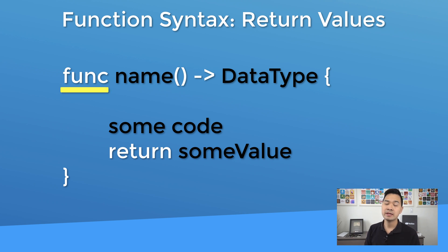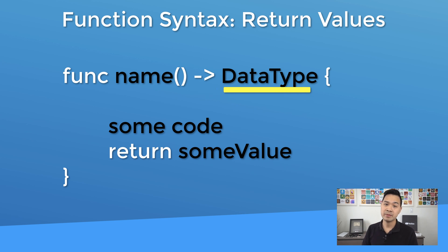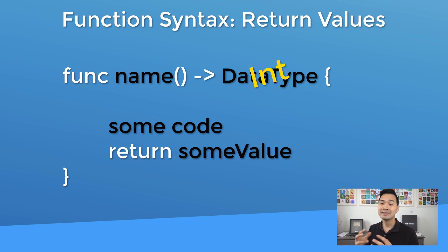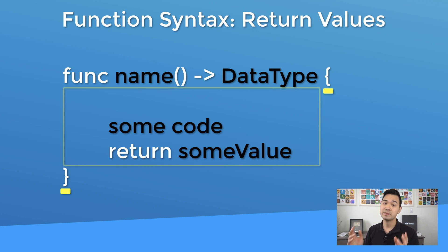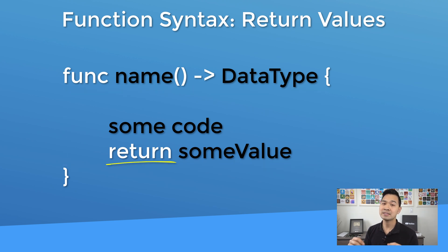You'll notice that we still have the func keyword and the function name followed by parentheses. But after that, you have a hyphen followed by a greater-than sign, which combines to look like an arrow, followed by a space and then the data type of the data you're going to return from the function. So in our case, add two numbers — if we wanted to return the result to the function caller, we would put Int where it says data type. After the data type, you have the curly brackets and you specify your code. If you do specify a return value, you must have the return keyword, which ends the function and returns the data back to the caller.